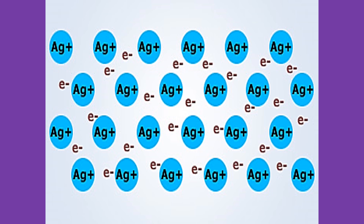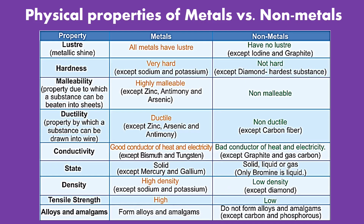But what are the other properties of metals? Based on the table, the different properties of metals are luster, hardness, malleability, ductility, conductivity, density, and tensile strength.